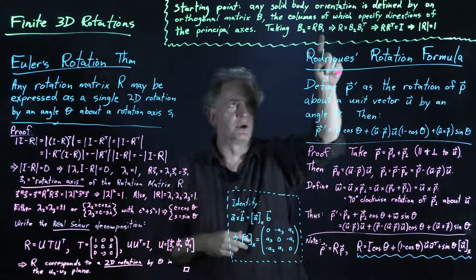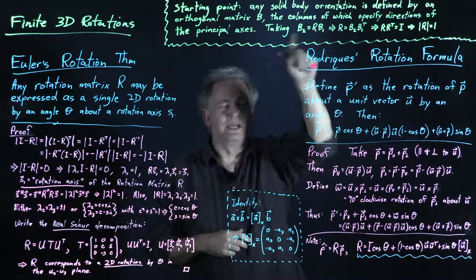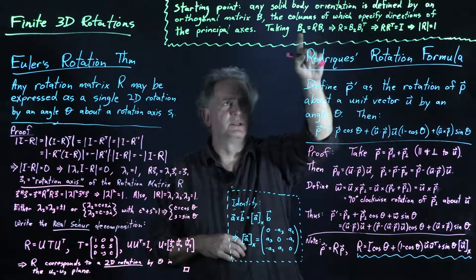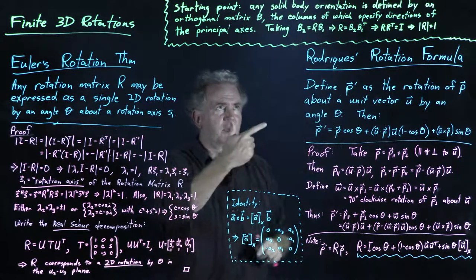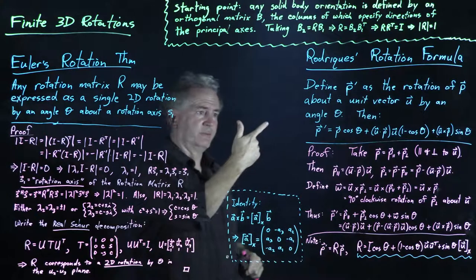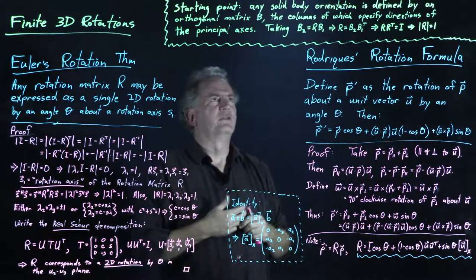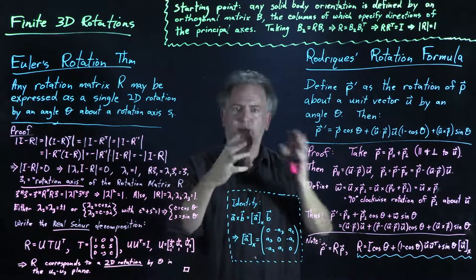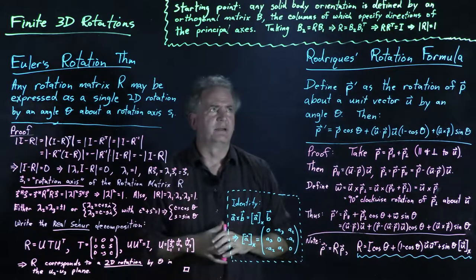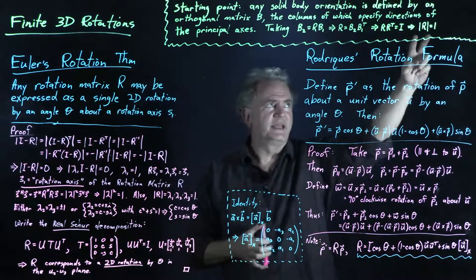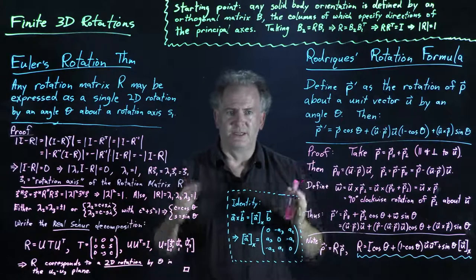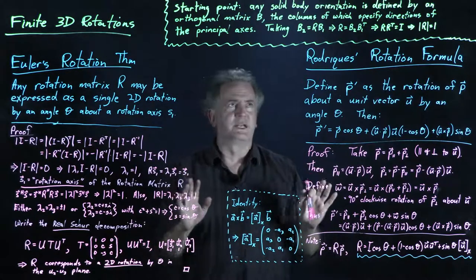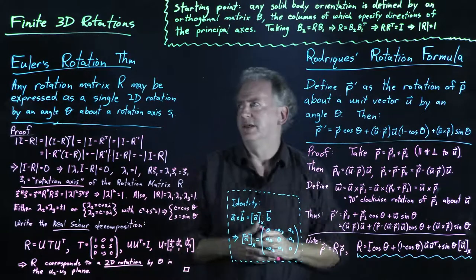The other possibility — where we start with a right-handed coordinate system but end up with a left-handed one, so det(B1) = 1 but det(B2) = -1 — corresponds to both a rotation and a reflection, where one axis faces the opposite direction. We can't do that simply by rotating a solid body. The case with det(R) = 1 is called a proper rotation, and that's what we'll focus on. The other case, called an improper rotation, can't be achieved just by rotating an object.